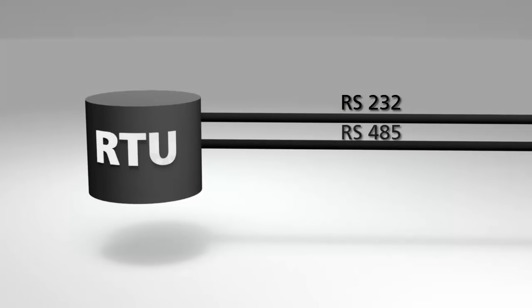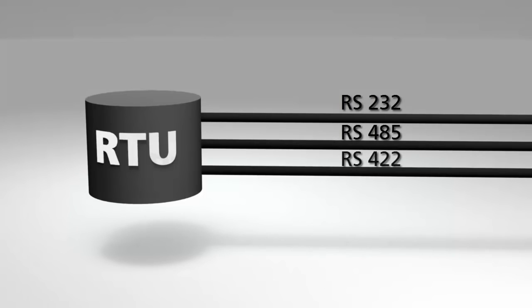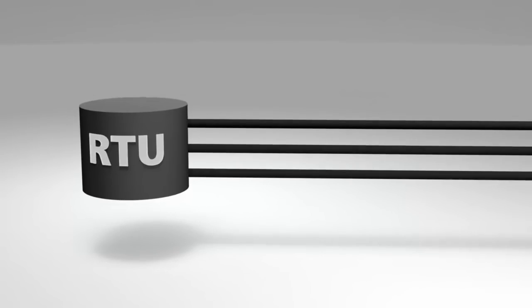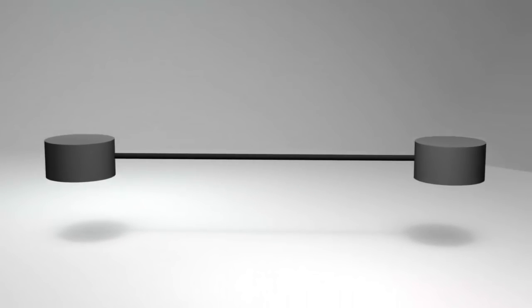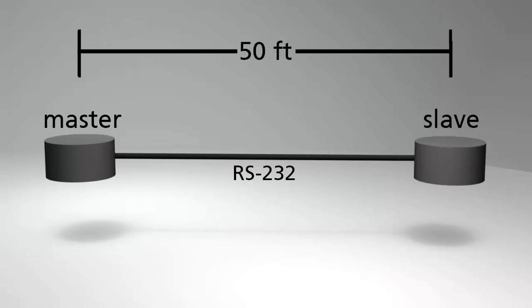Modbus RTU devices typically use one of three electrical interfaces: RS-232, RS-485, and RS-422. RS-232 is a simple point-to-point arrangement. If you only need to connect one device to another and the distance between the two devices is less than 50 feet or 15 meters, then RS-232 will do the job.